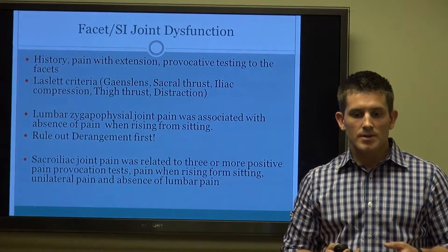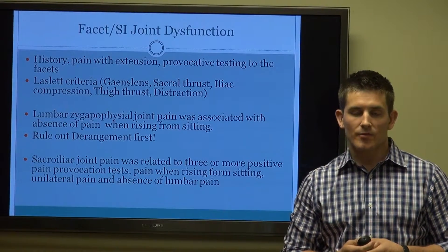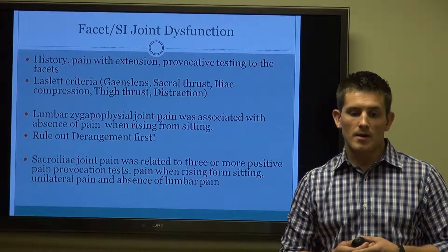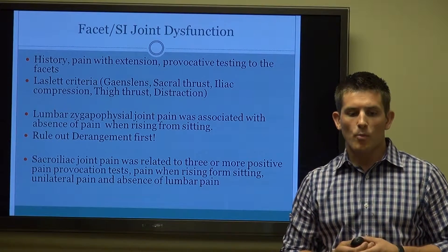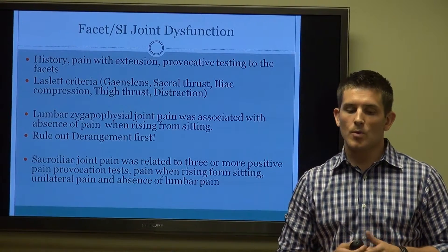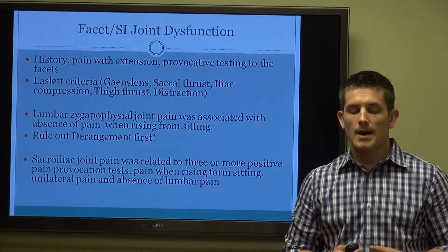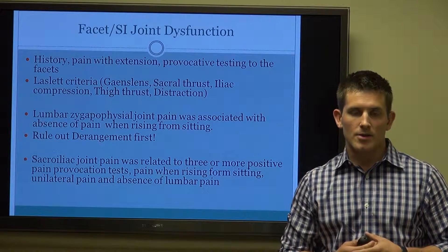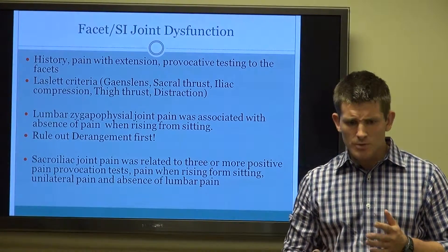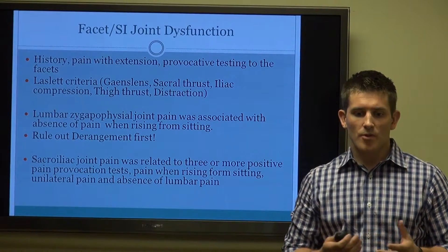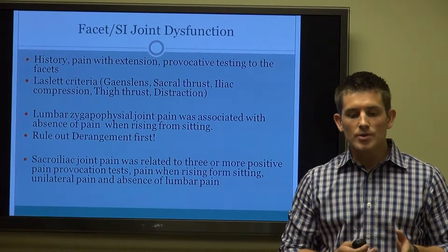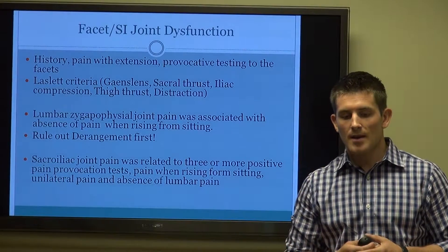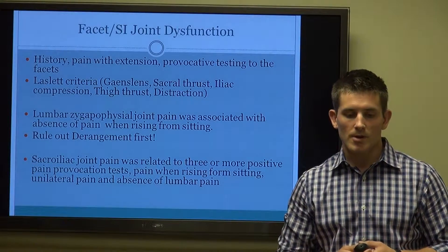With the lumbar Z joints, that's associated with absence of pain when rising from sitting — so the disc presents with pain going from sitting to standing, while the Z joints present with absence of pain with rising from sitting. When talking about the SI joints, we want to rule out the derangement first. Disc derangements will often mask as SI symptoms because of the nature of radiation with the disc. So the primary thing we want to make sure is not going on is disc derangement.